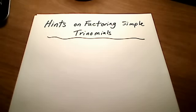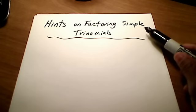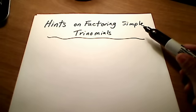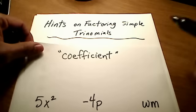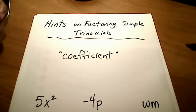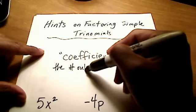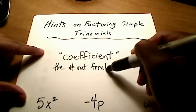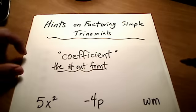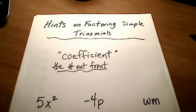I want to give you some hints on factoring simple trinomials. Before I begin, let me tell you what I mean by simple as opposed to those more difficult. Let's start with this fancy math word: coefficient. Coefficient is one of those really fancy math words that simply means the number out front. That's all it really means — don't be intimidated by it at all.